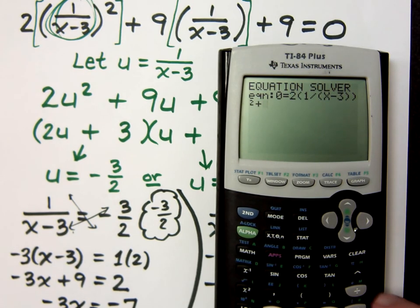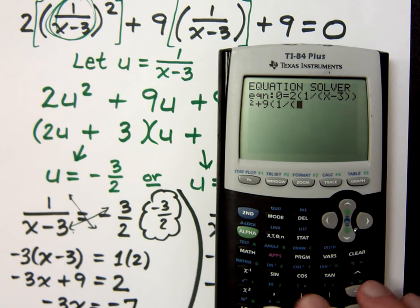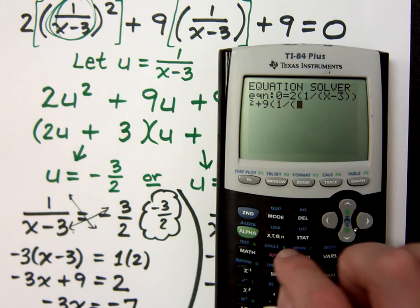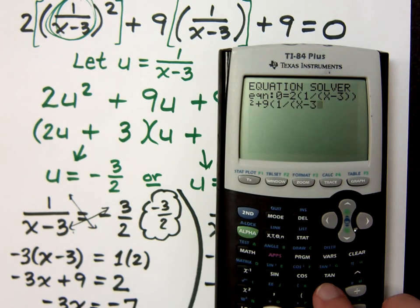Plus 9 times the group, 1 divided by, so my division, I've got x minus 3, so I have to open up parentheses. x minus 3. Close off the denominator. Close off the whole fraction. Plus 9.